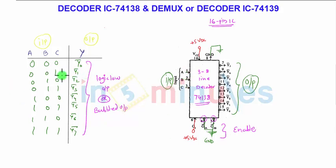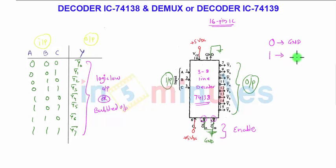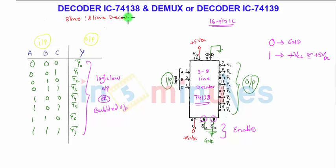IC 74138 is a 16-pin IC. To use it: 0 means ground and 1 means VCC. If you want to set a bit to 0, the pin should be connected to ground; if you want to set a bit to 1, it should be connected to plus 5 volt DC supply. That is all about the decoder IC 74138, also called the 3-line to 8-line decoder.